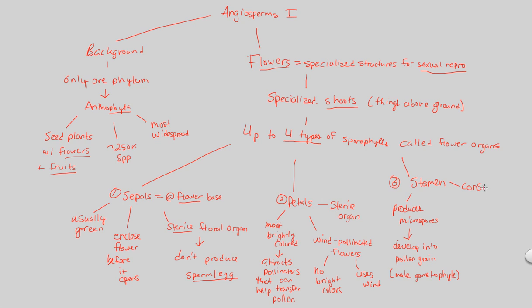More specifically, the stamen consists of a filament region, which is simply the stalk of the plant — a sturdy, structured part. It also contains the anther, which is the terminal sac where pollen is produced. The anther is at the end of the flower structure — the terminal end sac — where pollen is produced, making it the ultimate place for pollen production. That covers our first look at angiosperms. We'll continue and complete our discussion on the sporophyll modified leaf structures that are flower organs in the next video.